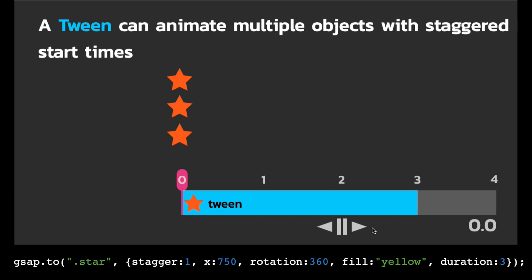Here it gets really cool. We have a single tween that can animate multiple objects with staggered start times. You'll notice that the target is still anything with a class of star, but we've added this stagger amount right here. That means that there's going to be one second between the start of each item. As the playhead progresses to a time of one, the second one starts. And then when it gets to a time of two, the third one starts. Staggered animations are extremely powerful in GSAP 3.0, and I can't wait to show you more about them.